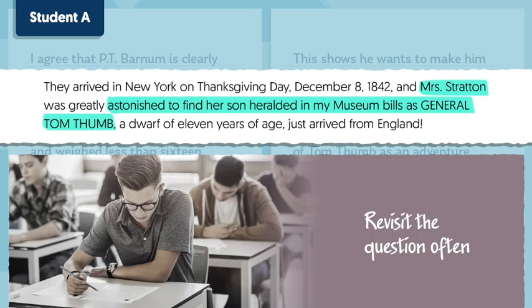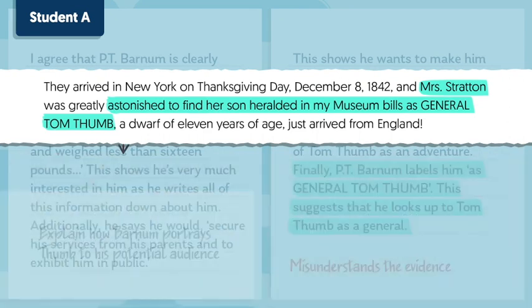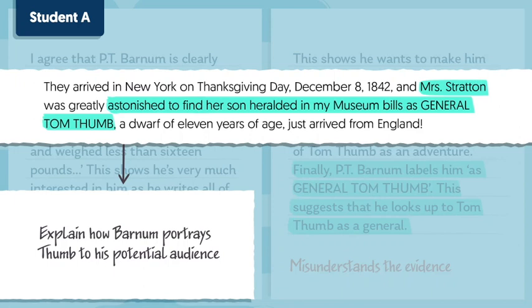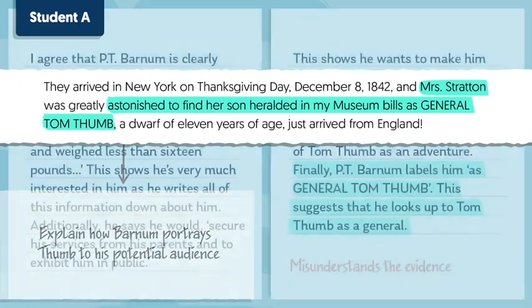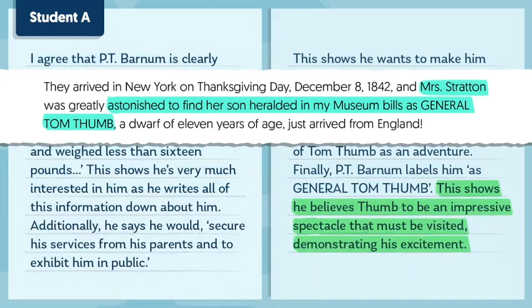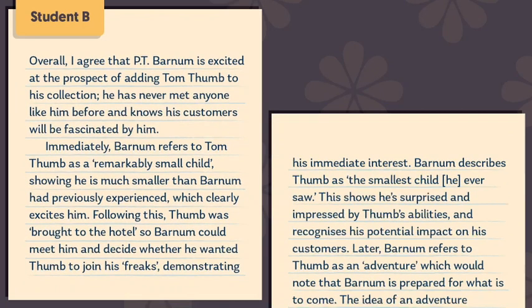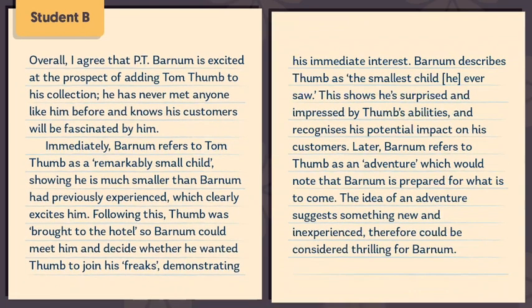But if you were going to make some sort of comment on this evidence, a better idea would be to explain how Barnum portrays Thumb to his potential audience while maintaining focus on the question. For example, by writing: 'This shows he believes Thumb to be an impressive spectacle that must be visited, demonstrating his excitement.' Now we've broken down this extract from Student A's response, we'll take a look at another response — Student B's — and see how it differs.